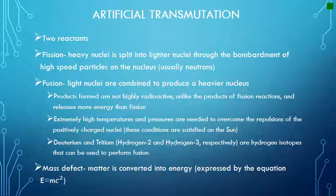Artificial transmutations have two reactants. There are two types: fission and fusion. Fission is when heavy nuclei split into lighter nuclei through the bombardment of high-speed particles on the nucleus — usually a neutron does this.